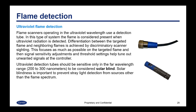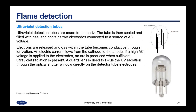Ultraviolet detection tubes should be sensitive only in the far wavelength range of 200 to 300 nanometers to be considered solar blind. Solar blindness is important to prevent stray light detection from sources other than the flame spectrum. Ultraviolet detection tubes are made from quartz, sealed and filled with gas, and contain two electrodes connected to a source of AC voltage. Electrons are released and the gas within the tube becomes conductive through ionization. An electric current flows from the cathode to the anode, and if a high AC voltage is applied to the electrodes, an arc is produced only when sufficient ultraviolet radiation is present.